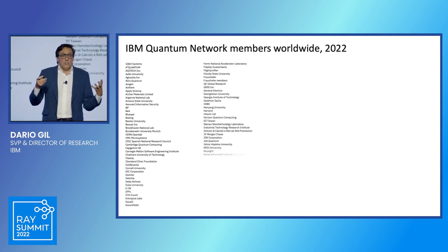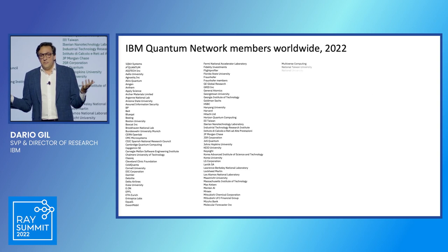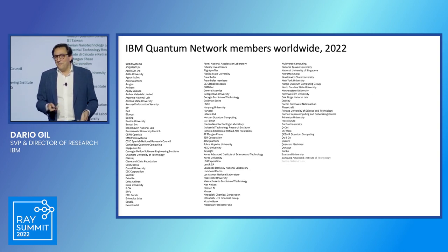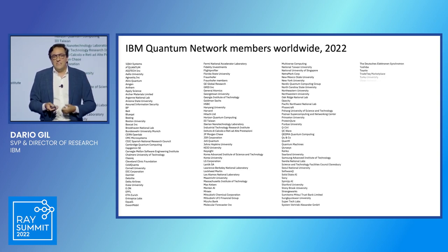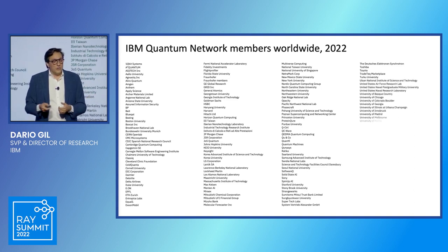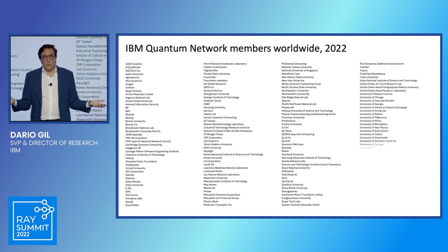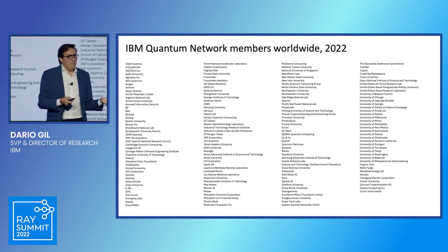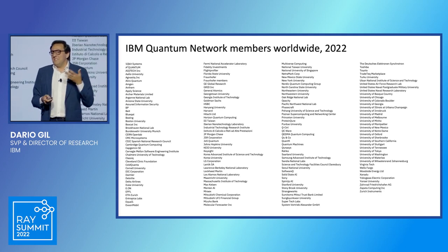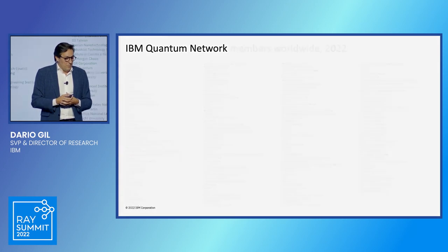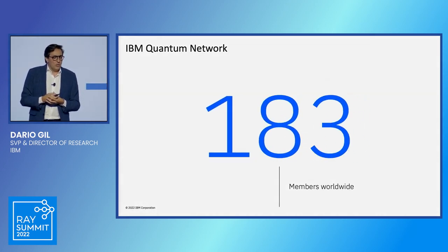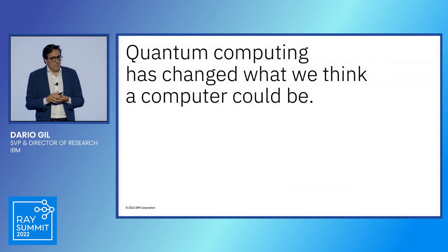We now have over 180 institutions — from startups to Fortune 500 companies, universities, national laboratories all over the world — who are creating their first teams to figure out how to write programs in quantum and start developing the skills to explore this new paradigm of computing. Over 183 members altogether. It is changing the nature of what we think a computer is.